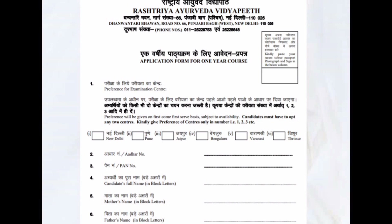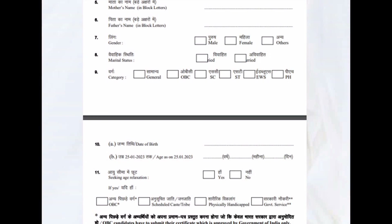For the preference of examination centers, give preference number one to your most preferred center. For example, if your preference is Bangalore, write one before Bangalore; if Thrissur is your second preference, write two before Thrissur; if Pune is third, write three before Pune. Then write Aadhaar card number and PAN card number as they are. Candidate's full name, mother's name, and father's name — all in capital letters. Tick gender and marital status, and select the correct category.